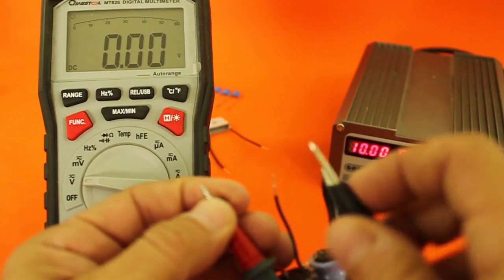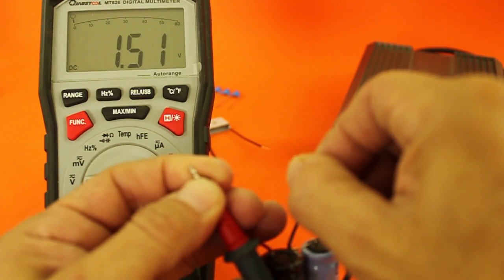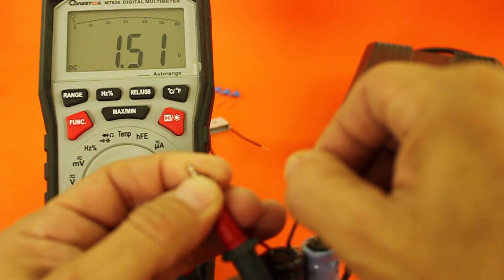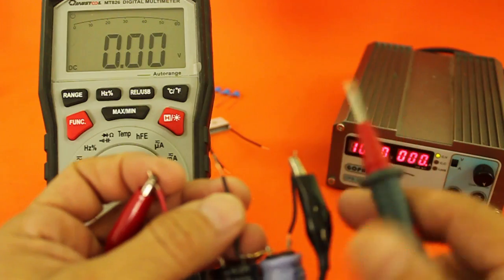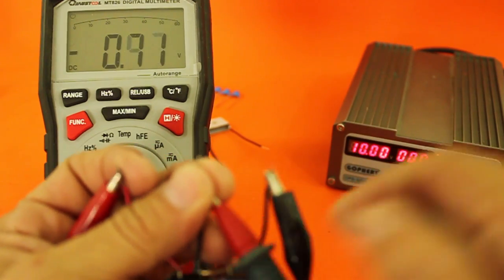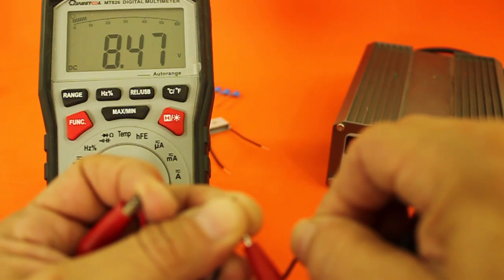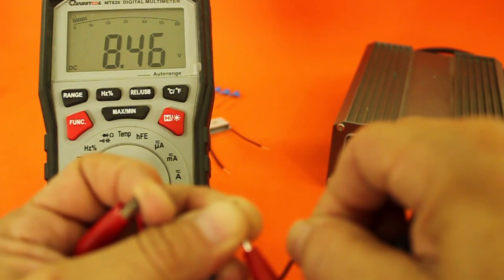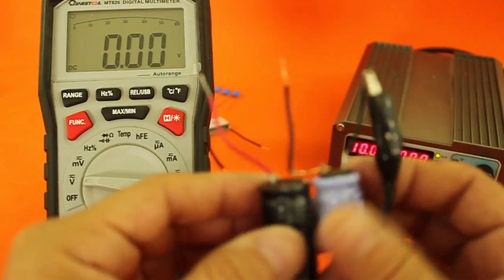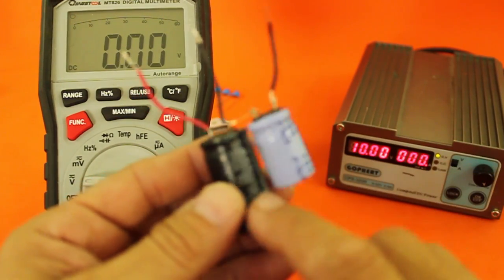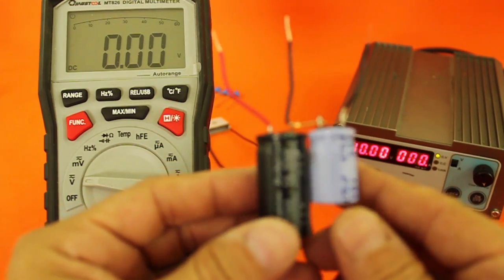Between the terminals of capacitor 1, we have 1.51 volts, pretty close to the 1.5 volts that we calculated. And between capacitor 2, we have 8.47 volts. So, as you can see, the voltage divides between the two capacitors according to the formula that we previously gave.